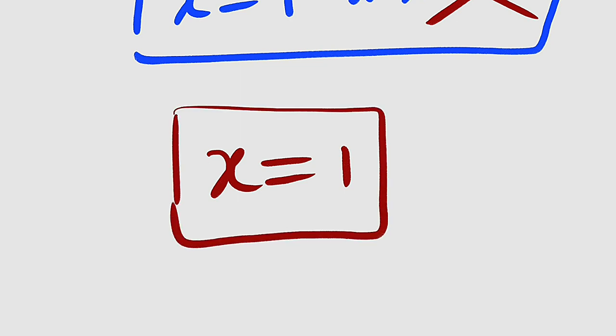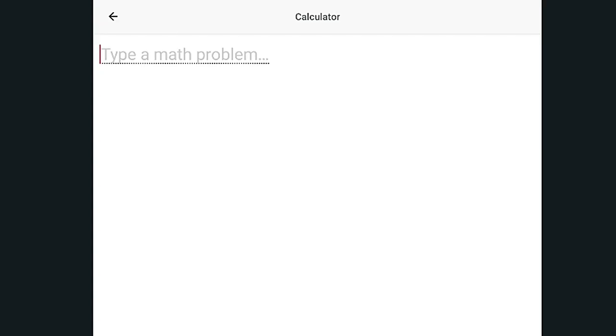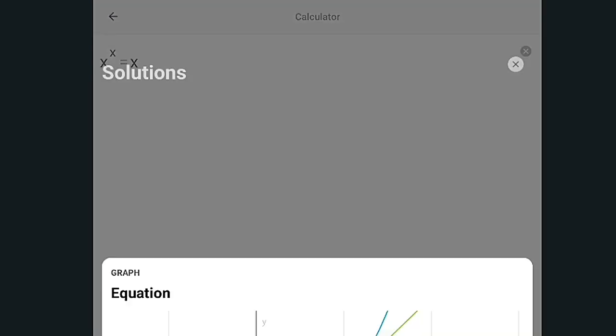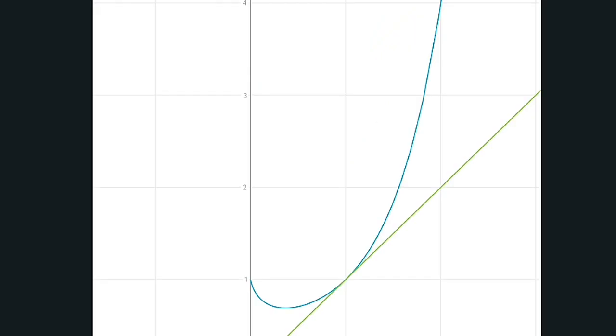And let us check it on the graph to see whether we have other points. So here is my calculator. We have x raised to the power of x. We have this to be equal to x. Let us look at the graph. You can see the graph right here.